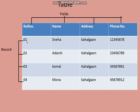This is the first row. This is the third row record, and this is the fourth row record. In this example, the row number, name, address, and phone number are called fields.